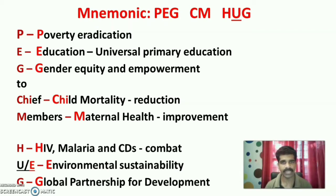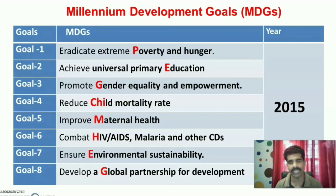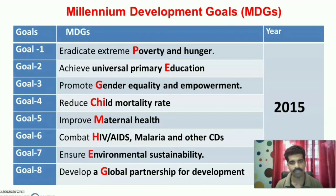Let us explain in detail the Millennium Development Goals. There are eight goals: Goal 1 — eradicate extreme poverty and hunger; Goal 2 — achieve universal primary education; Goal 3 — promote gender equity and empowerment; Goal 4 — reduce child mortality rate; Goal 5 — improve maternal health; Goal 6 — combat HIV/AIDS, malaria and other communicable diseases; Goal 7 — ensure environmental sustainability; Goal 8 — develop a global partnership for development. All these goals had to be achieved by 2015.